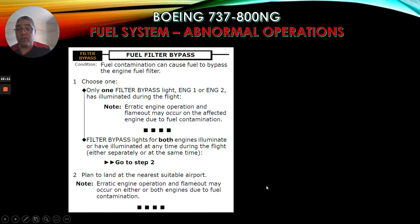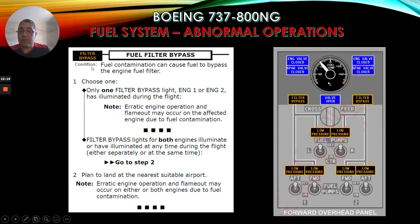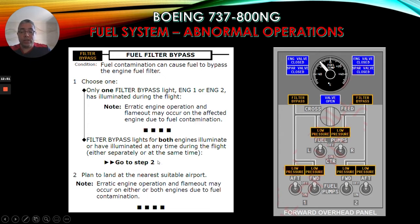For the fuel filter bypass - you can see the filter bypass lights here and here - fuel contamination can cause fuel to bypass the engine fuel filter. Choose one: if only one filter bypass light - engine one or engine two - has illuminated during the flight, note that erratic engine operation and flame out may occur on the affected engine due to fuel contamination. If filter bypass lights for both engines illuminate or have illuminated at any time during the flight, either separately or at the same time, go to step two: plan to land at the nearest suitable airport. Note: erratic engine operation and flame out may occur on either or both engines due to fuel contamination.